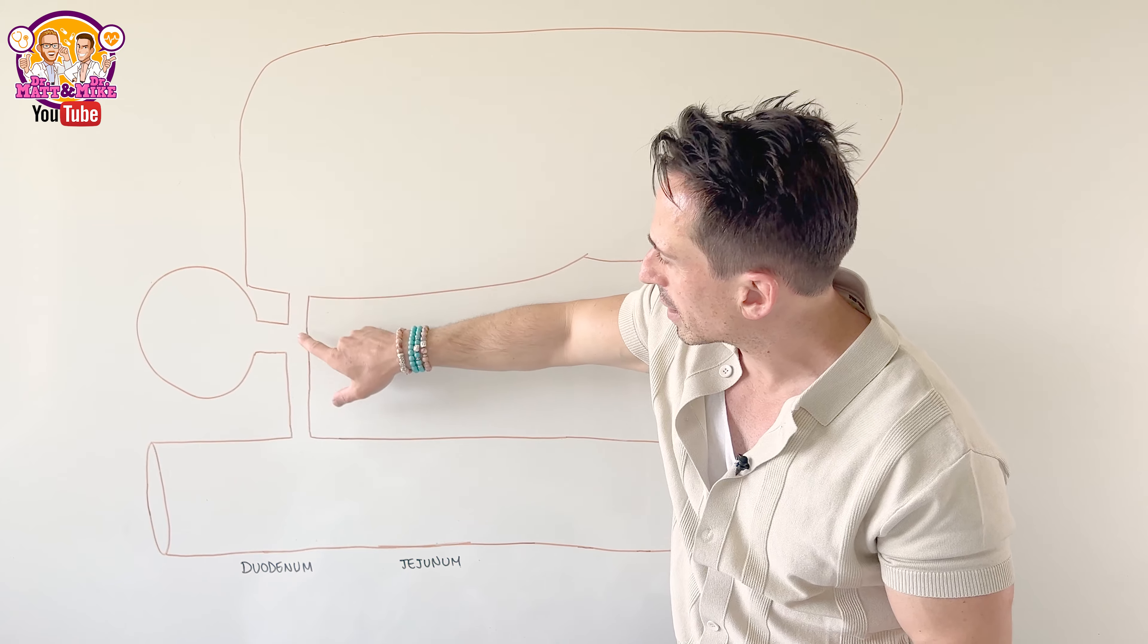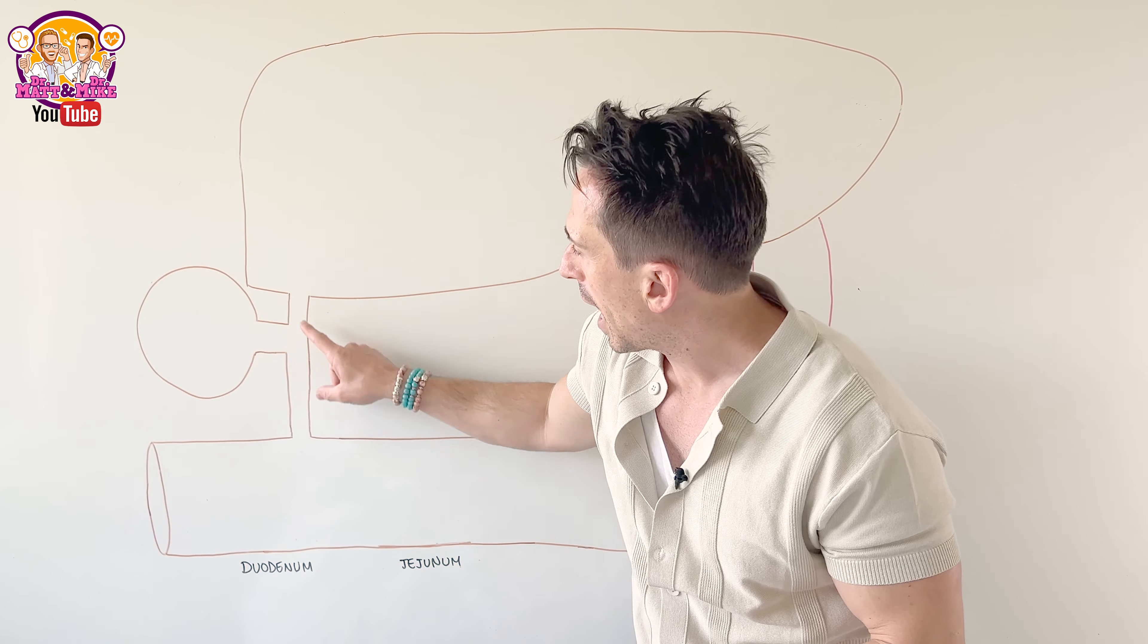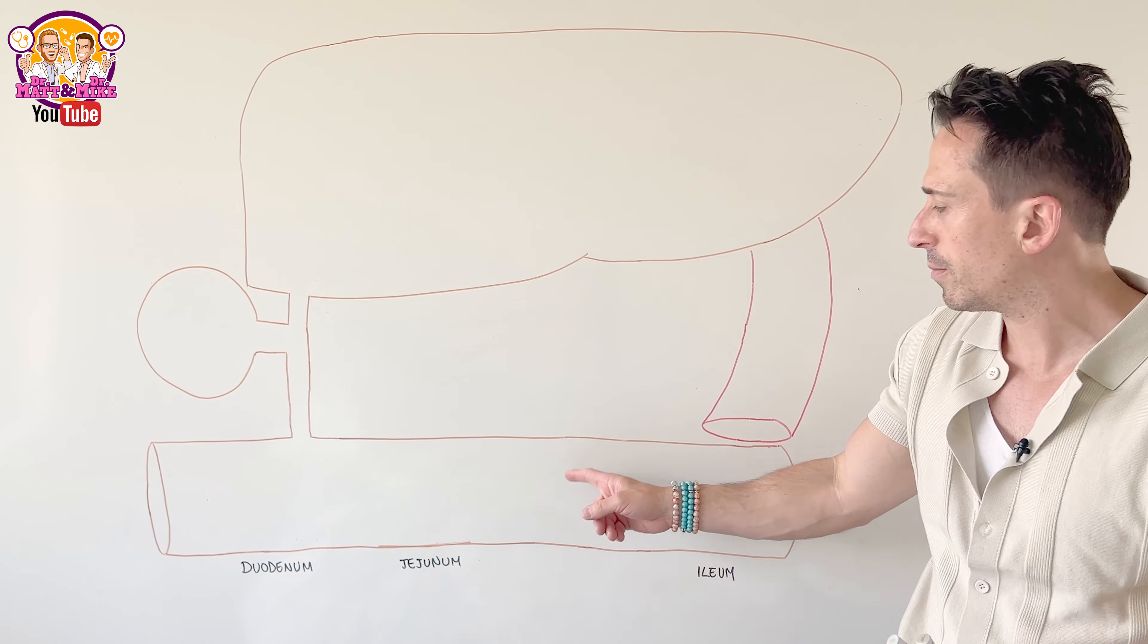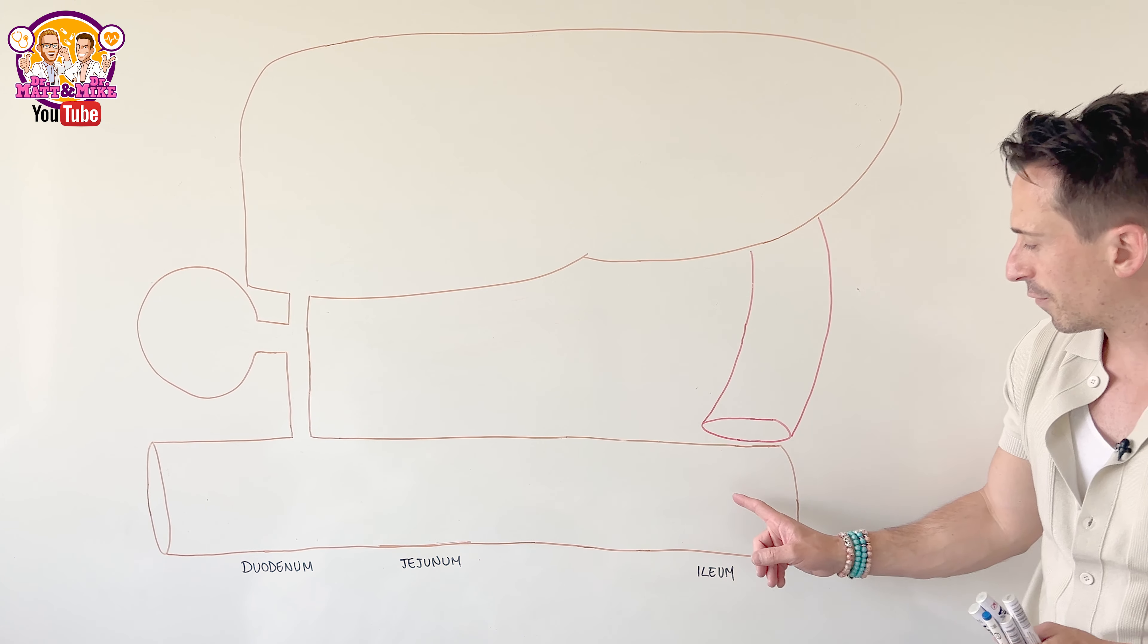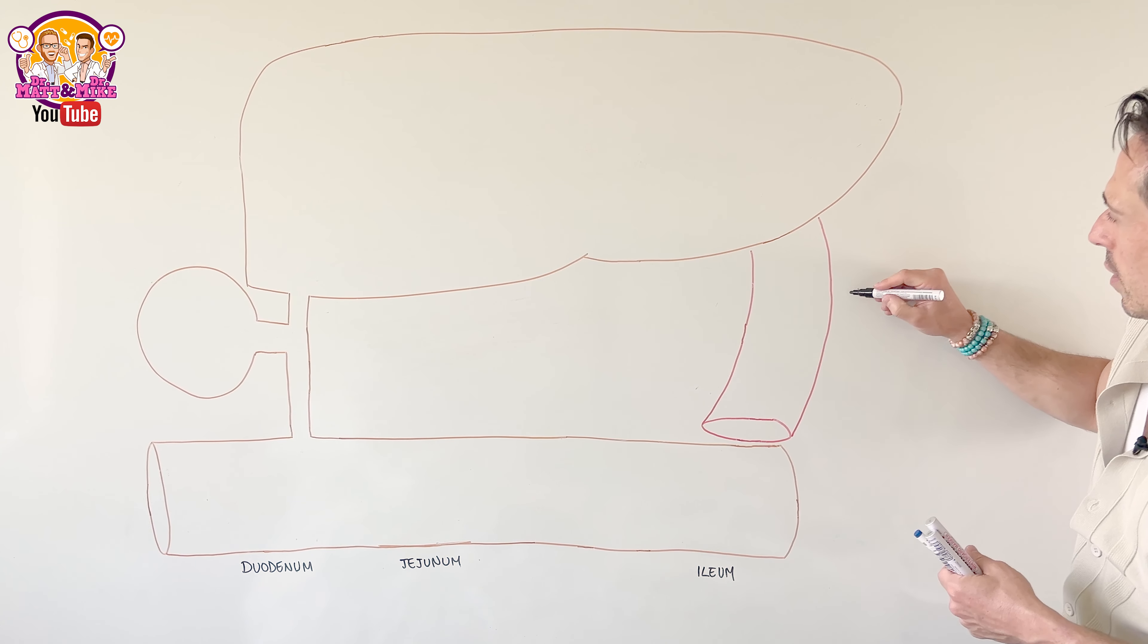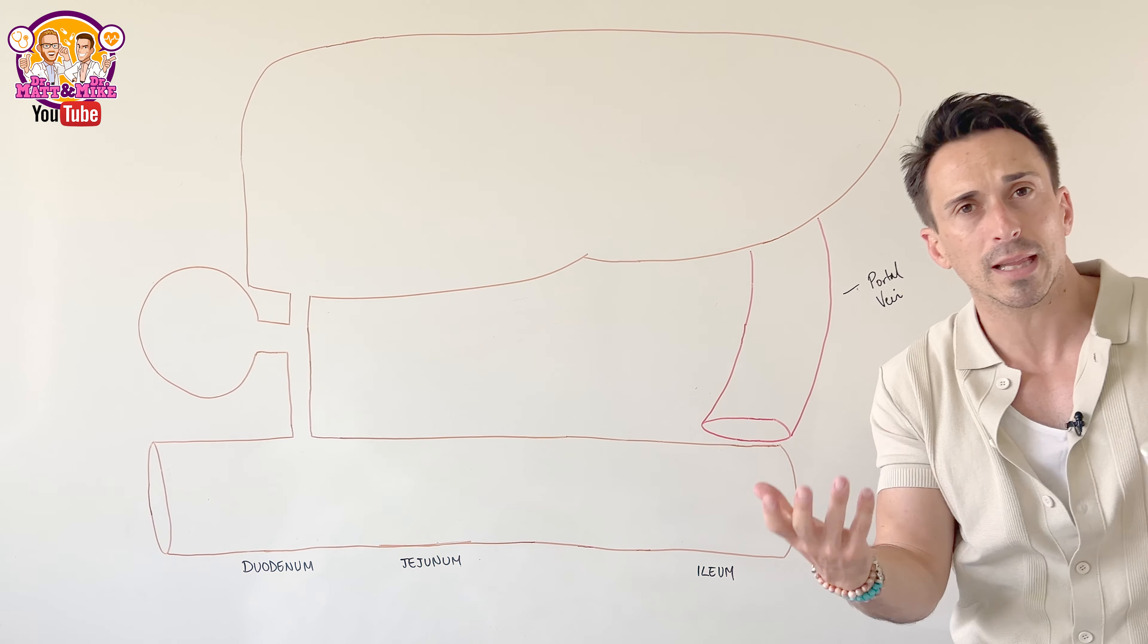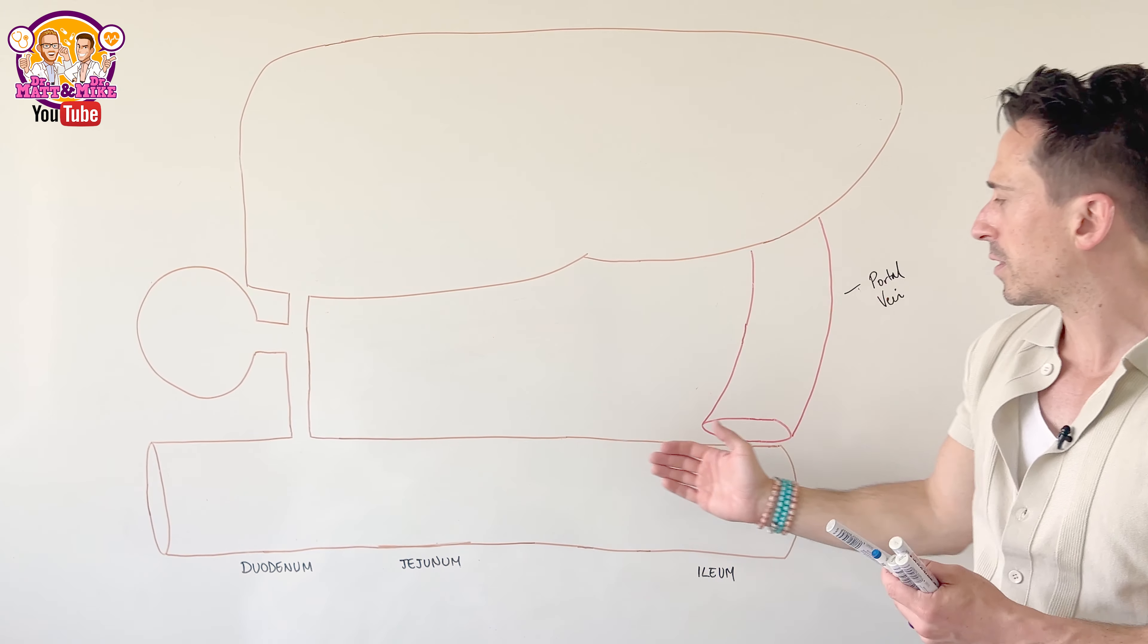Now from the liver, we've got its connection with the gallbladder, which stores and concentrates bile and can secrete it into the small intestines. Small intestines have three components: the duodenum, then the jejunum, and then finally, the most terminal part of the small intestines, the ileum, before it moves into the colon or the large intestines. We also have here the portal vein or the portal system. This is important because it absorbs all those important vitamins, electrolytes, nutrients that need to be transported back to the liver.